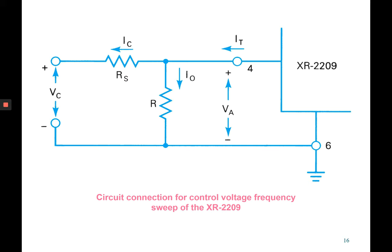This is the circuit connection for the VCO XR2209, and you need to refer to the data sheet of this IC before using it in your design system. Make sure you know which pin needs to connect with which component in order to avoid damaging the IC or rendering it unusable. That's it for this video — I will see you again in the next video to finish up this chapter. Thank you.